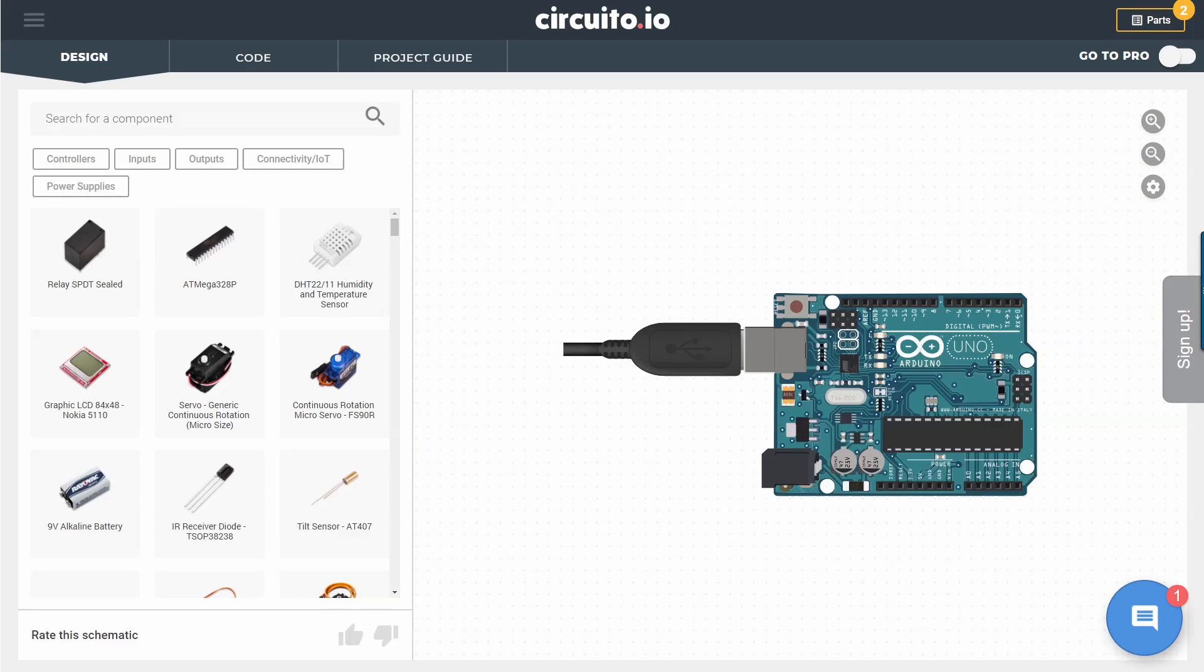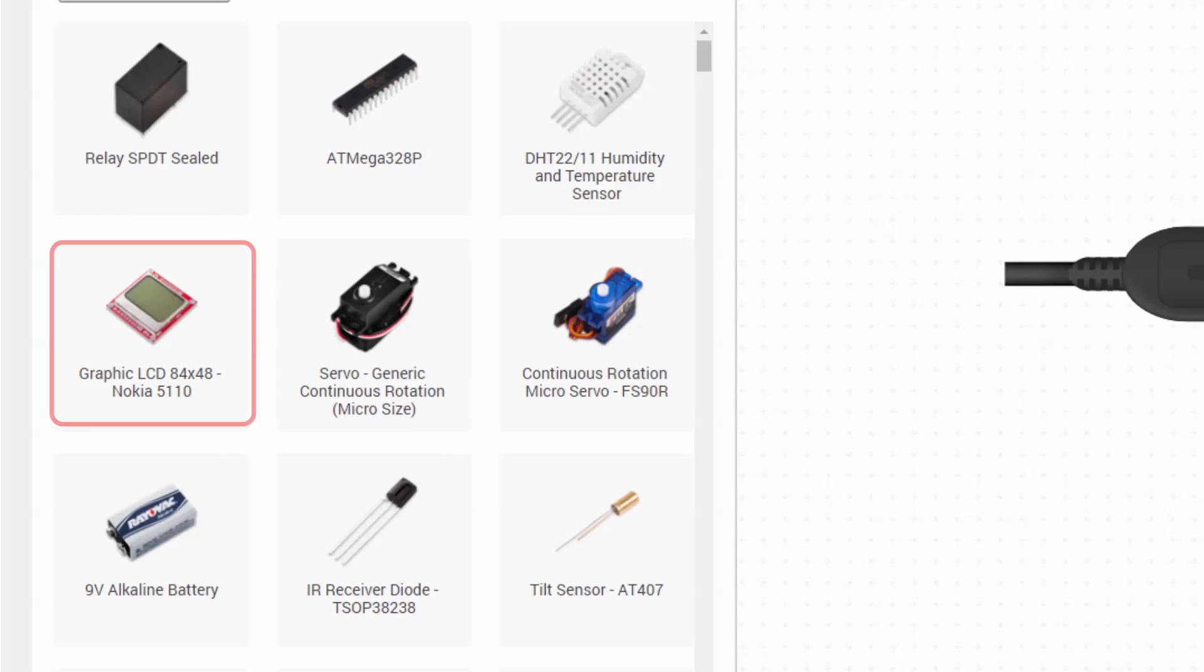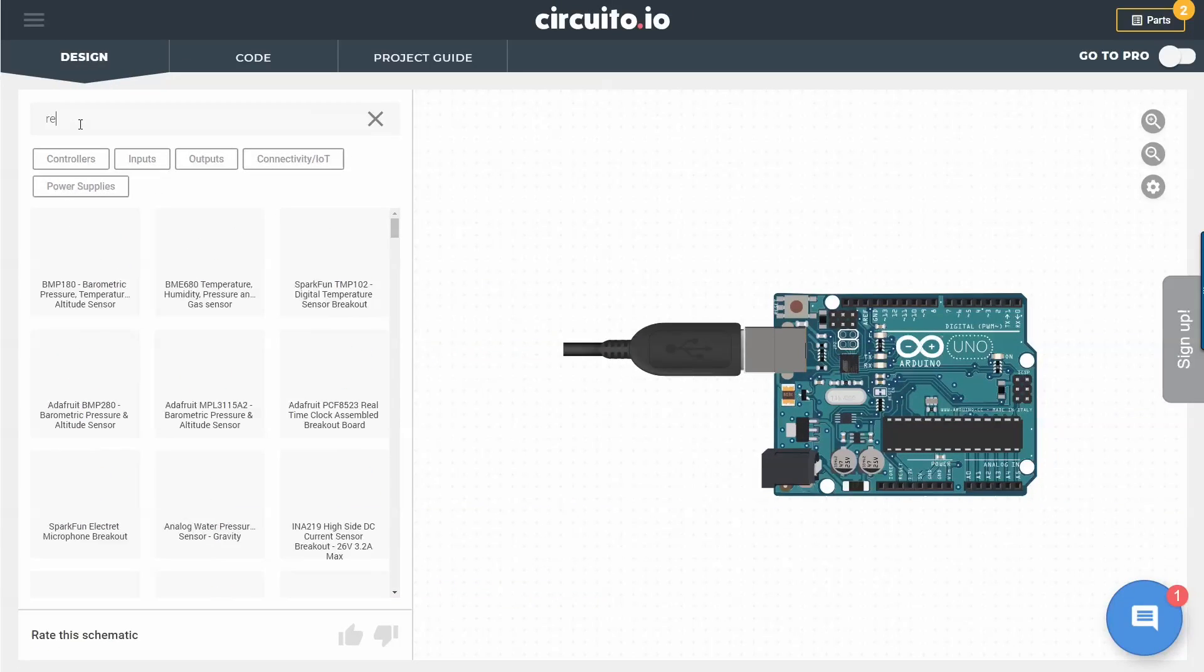Each component in Circuito I.O. is called a block. Each block can contain different circuits.